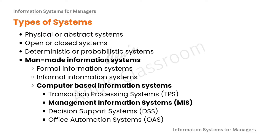There are many different types of systems like physical or abstract systems, open or closed systems, deterministic or probabilistic systems, and man-made information systems, which is what we will be concentrating on. Even in man-made information systems, we have different categories like formal information systems, informal information systems, and computer-based information systems. Since we are talking about information systems for managers, we will concentrate on the computer-based information systems.